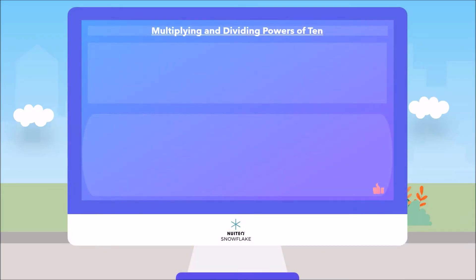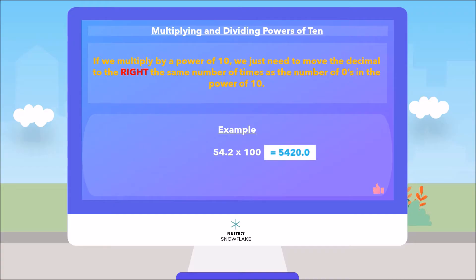Now let's talk about powers of 10. If we multiply by a power of 10, we just need to move the decimal to the right the same number of times as the number of zeros in the power of 10. For example, 54.2 times 100 equals 5420 or 5420.0. The decimal moved two spaces to the right.